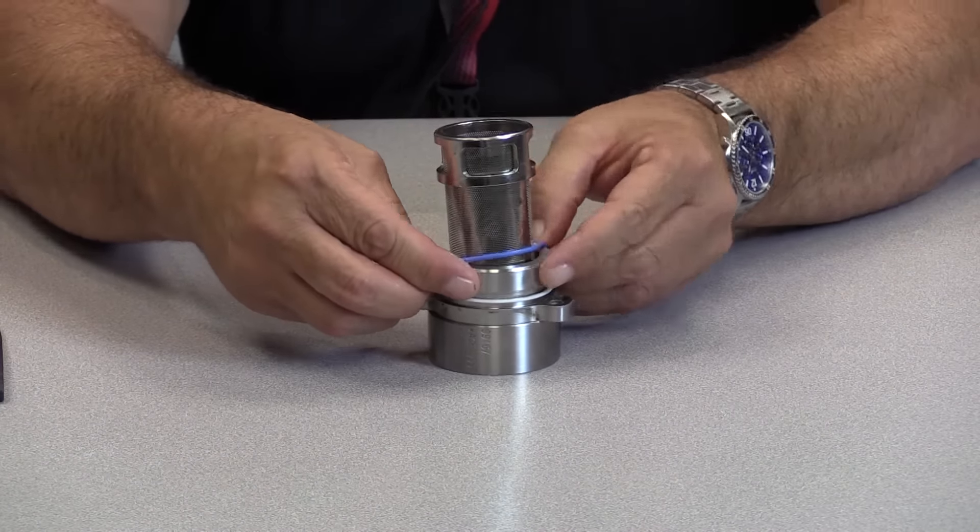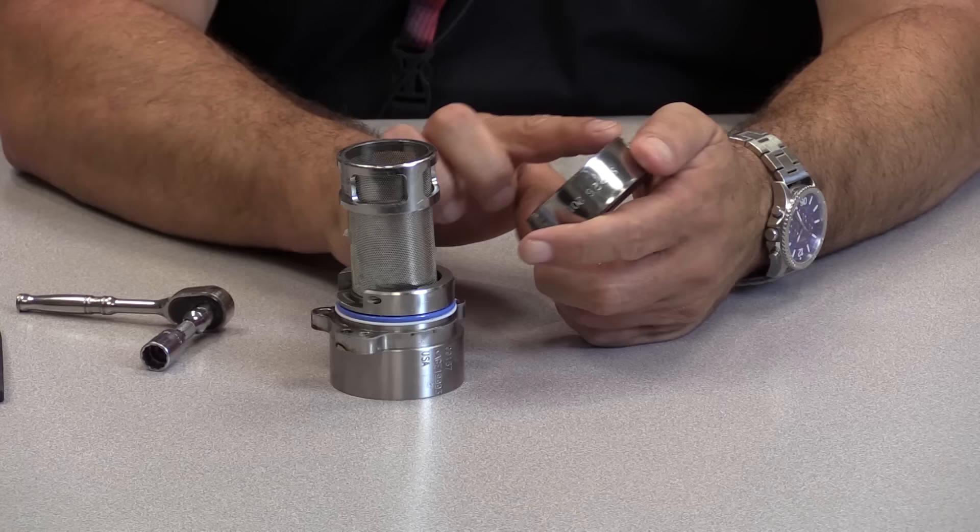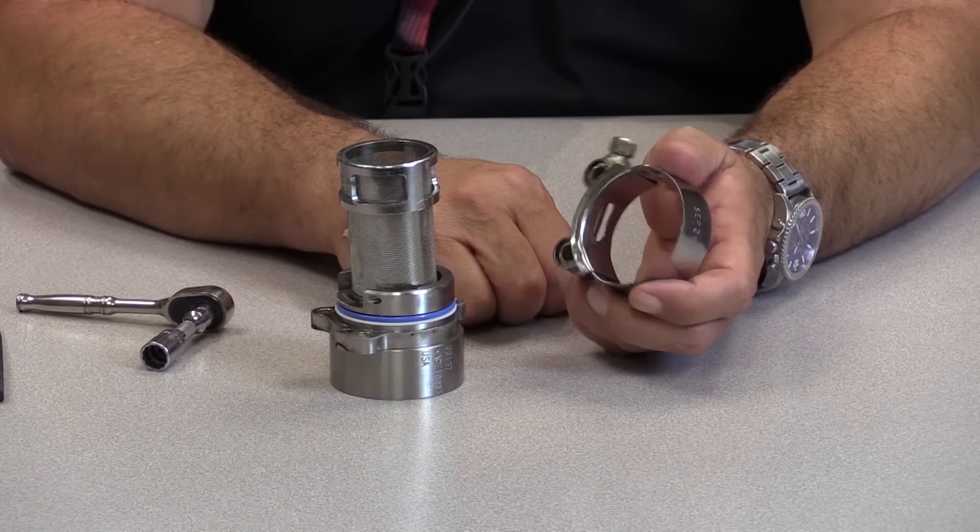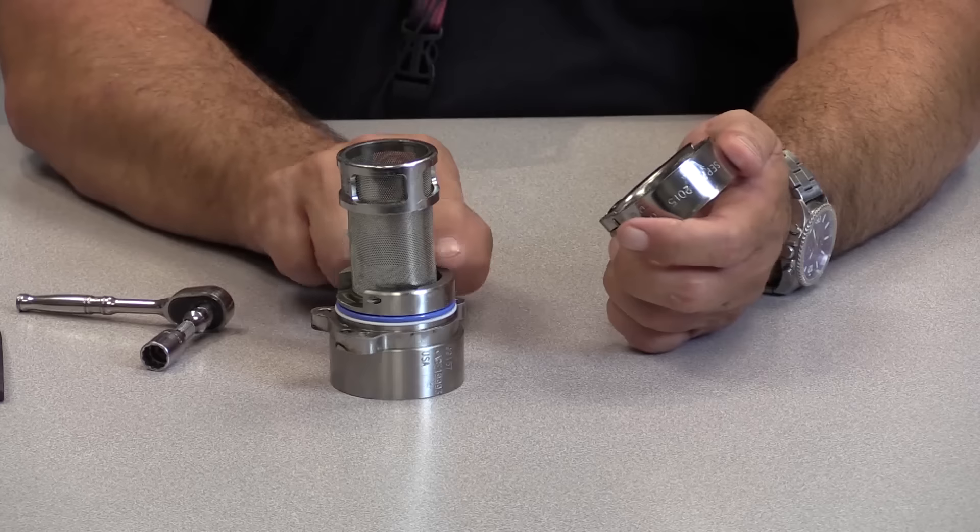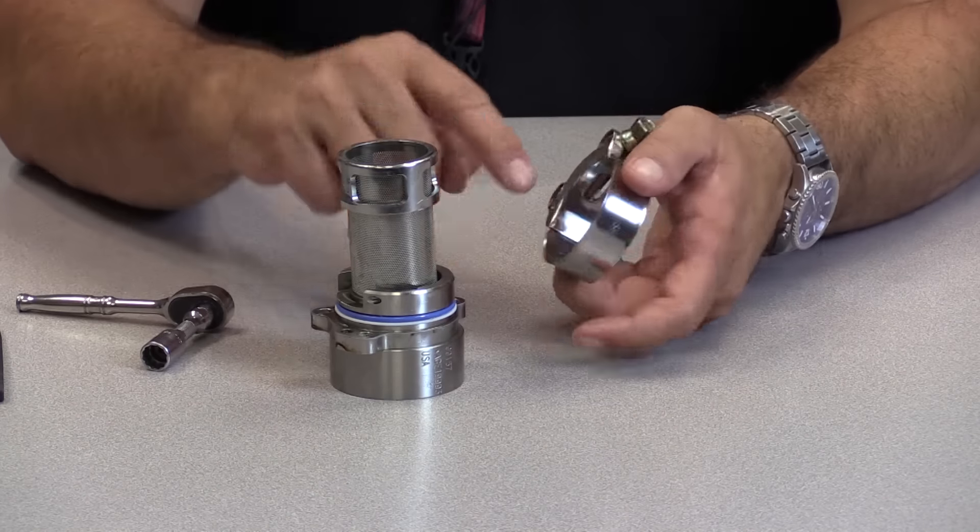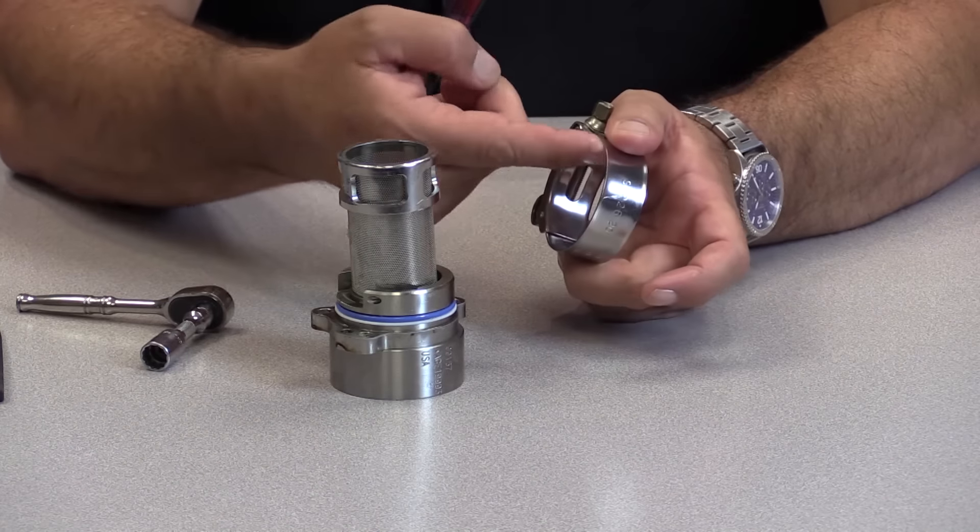And this is where our clamp comes into play. Again, your services engineering group can provide specific part numbers for clamps that they found that are good for this task. Really anything that's the right size will do, as long as it's smooth on the inside diameter.